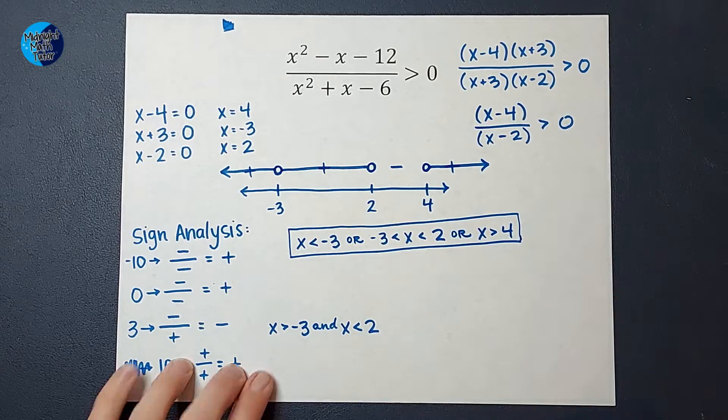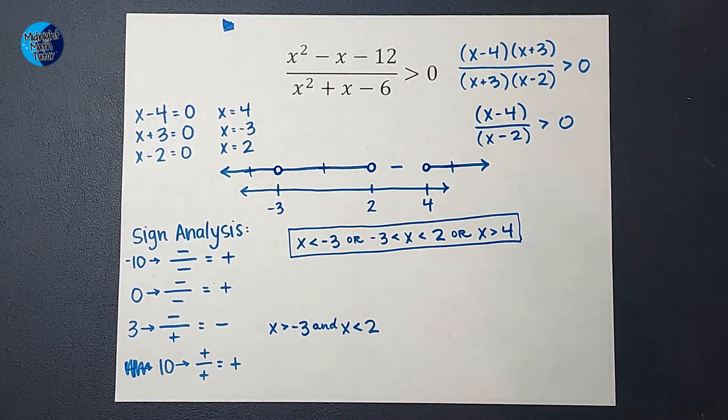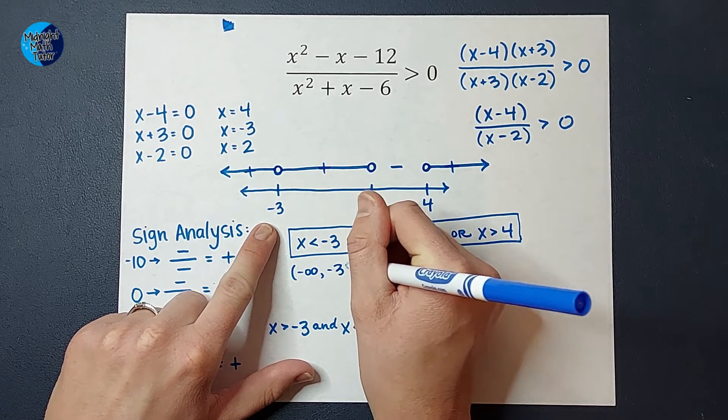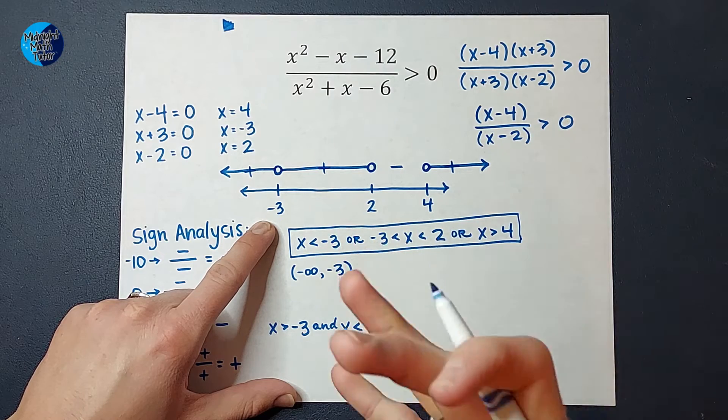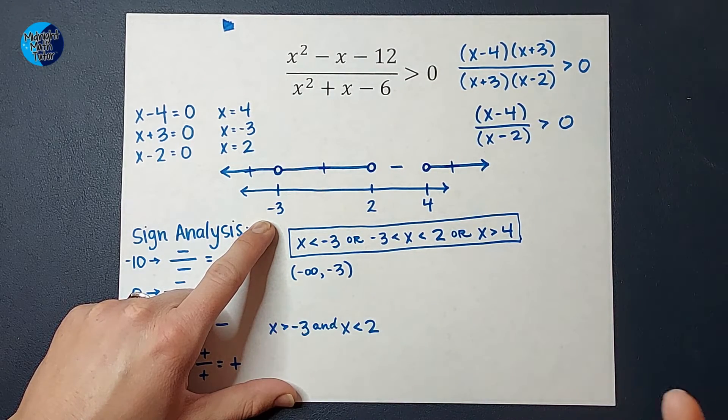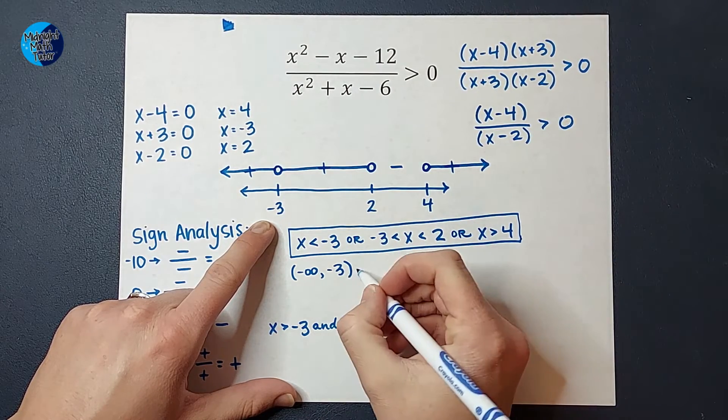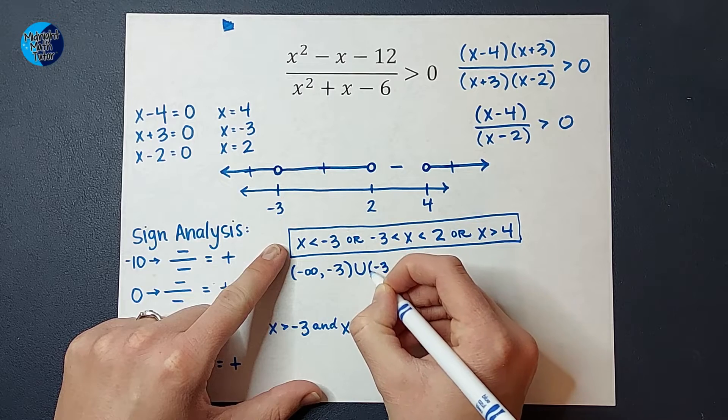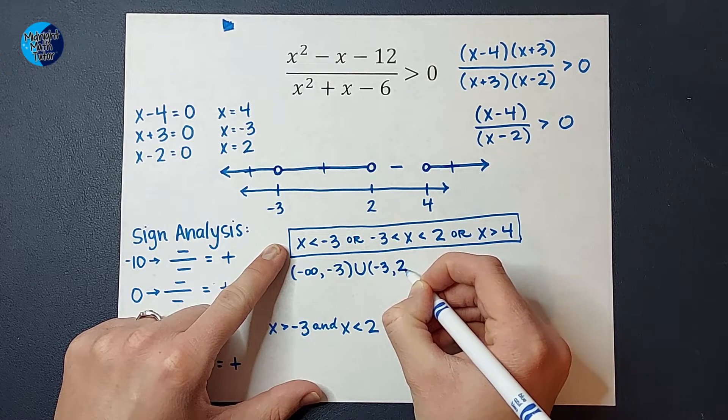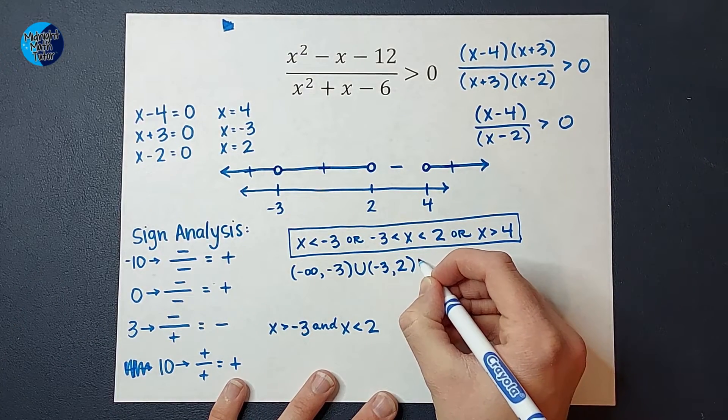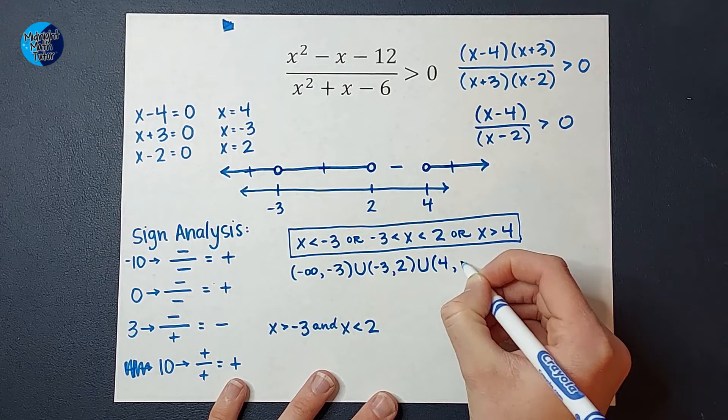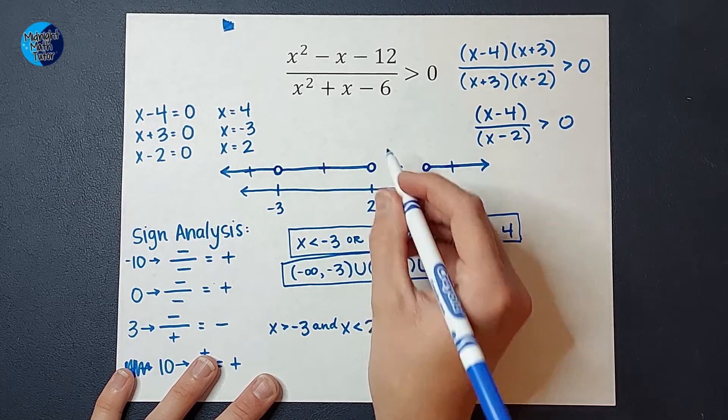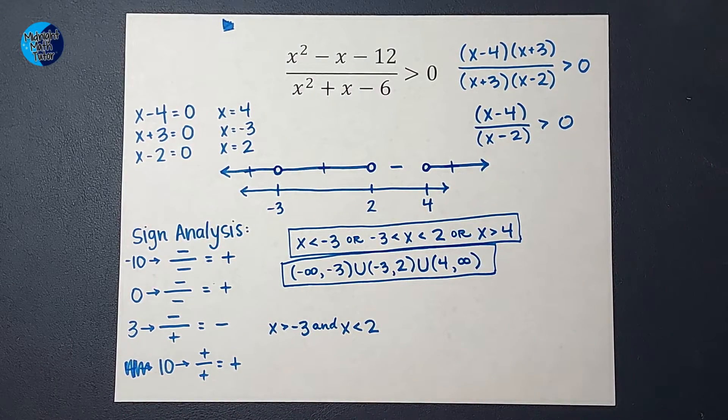If your teacher wants it in interval notation, we would say pick a number from negative infinity. Any number from negative infinity to negative 3. They both get parentheses because you can't actually be those numbers. They're the boundary. Right? Negative infinity always gets a parenthesis and negative 3 gets one because of that open circle. Then I have a U for union, meaning this is together with, you can also pick something from negative 3, not including negative 3, that's why it has a parenthesis, to 2, not including 2, so it has a parenthesis. And this is also together with, pick any number from 4 to infinity, both with parentheses. If any of those were closed circle or equal to, you would use a bracket instead of a parenthesis.